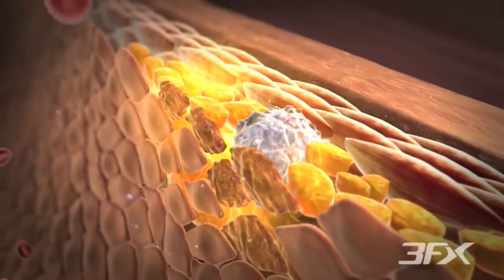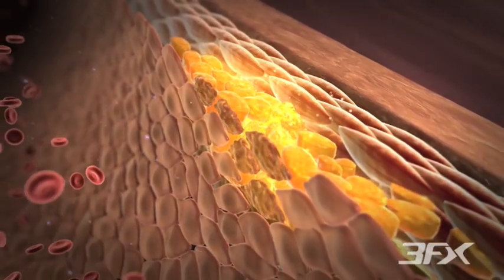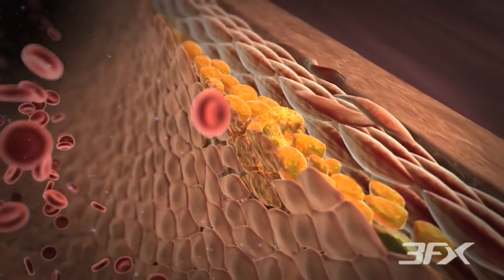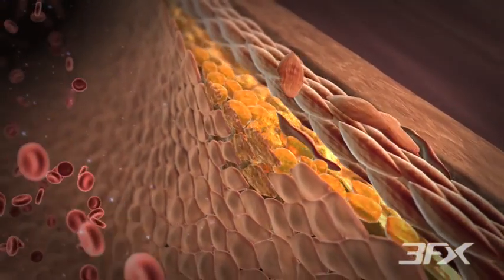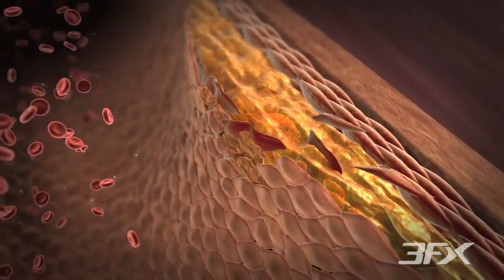Oxidative stress subsequently promotes the formation of foam cells and fatty streaks. In addition, vascular smooth muscle cells exhibit enhanced migration to newly formed lesions, further augmenting plaque development.